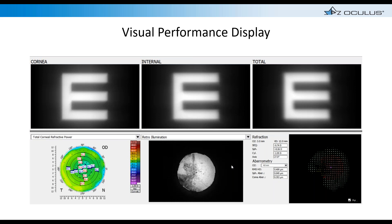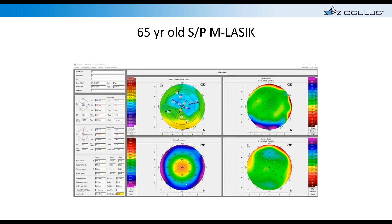The Visual Performance Display on the AXL Wave takes high-order aberrations of the total eye and separates corneal from internal aberrations. For phakic patients, you can determine what's happening in the lens; for pseudophakic patients, you can determine whether the IOL or the cornea is causing visual performance issues. This is especially useful when patients who have had prior corneal surgery present for cataract evaluation — it helps distinguish whether the visual complaint is from the cataract or from the prior corneal surgery.